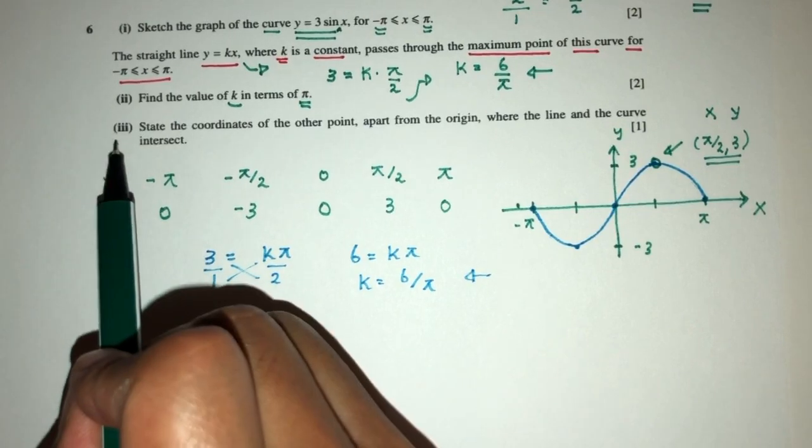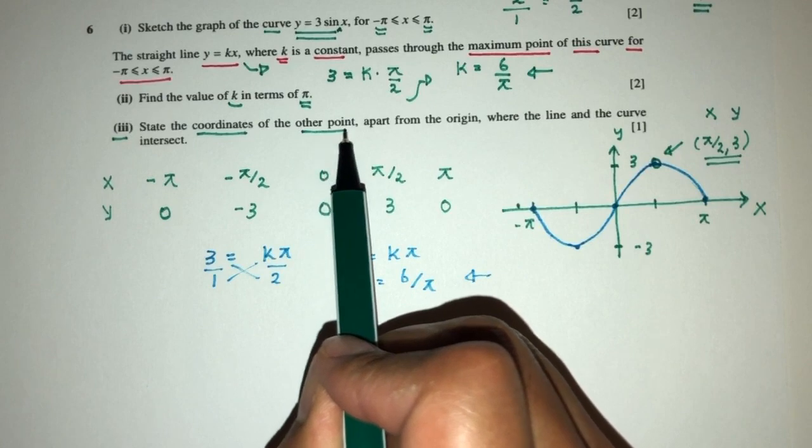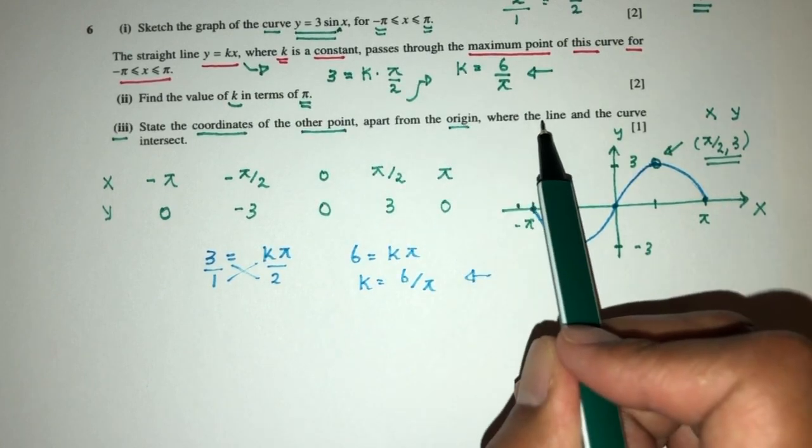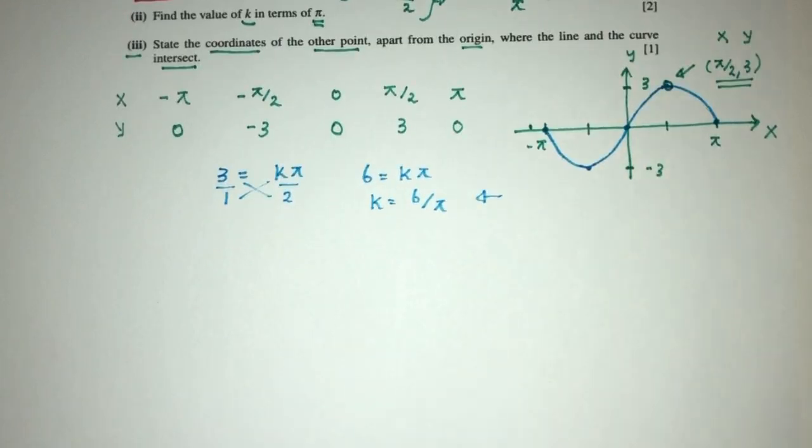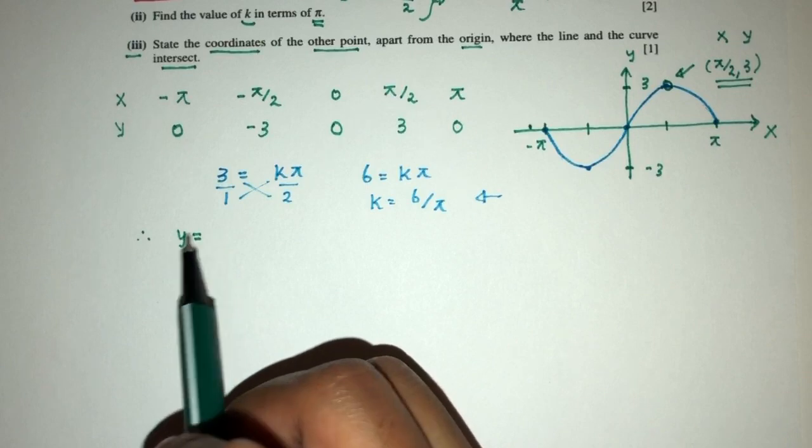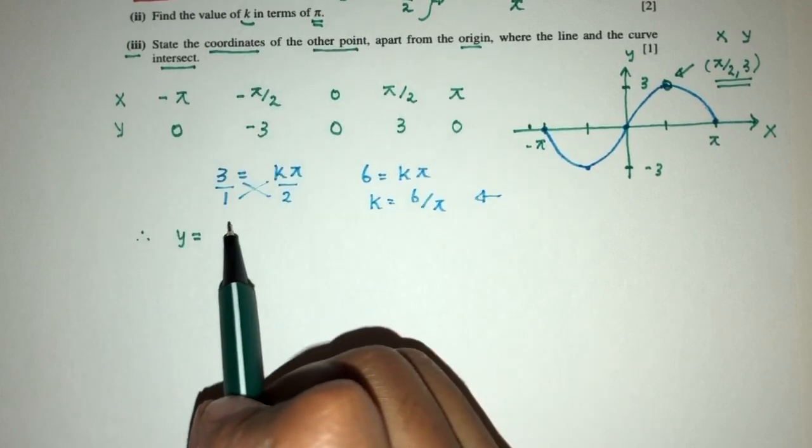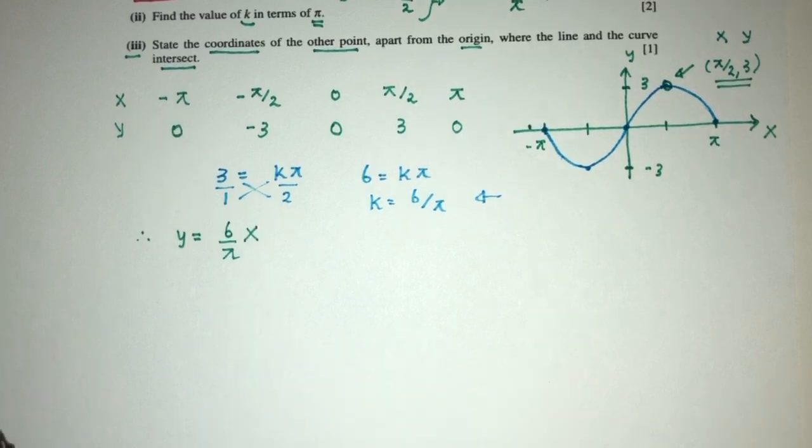Now for part 3, we have to state the coordinates of the other point apart from O where the line and the curve intersect. So let's find out where does it intersect. So now we know that y is also equal to k which is 6 over pi x. This is my equation of the line.